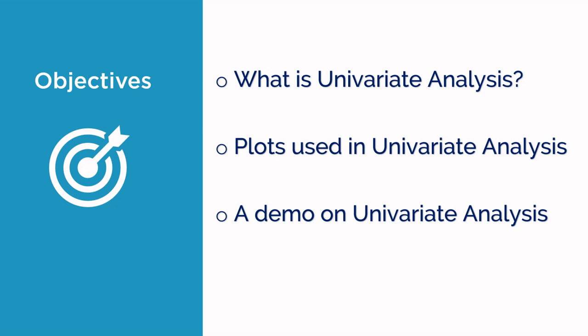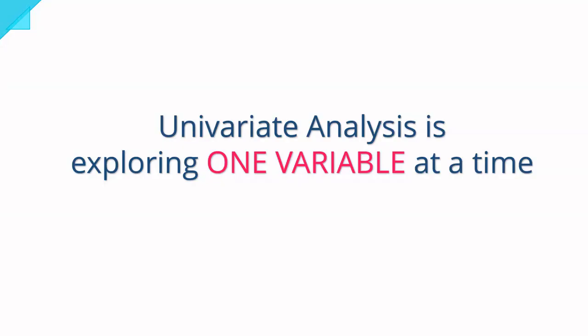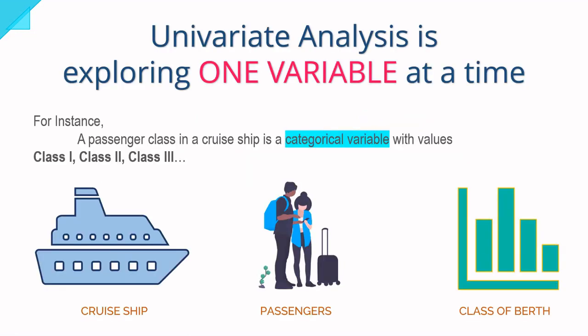What is univariate analysis? Univariate analysis is about exploring one variable at a time. It is important to explore each variable to understand its importance in the dataset and the kind of insight it provides. For instance, in a cruise travel record, a passenger class — which is a categorical variable with values like class 1, class 2, and class 3 — if we explore this variable more, we'll be able to understand its association with other variables such as age groups and the occupation of the passenger.